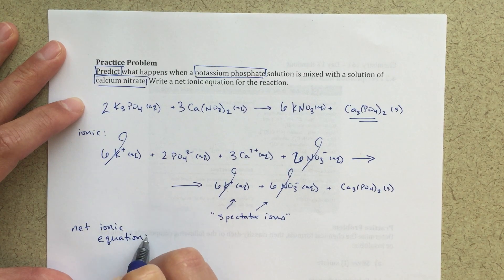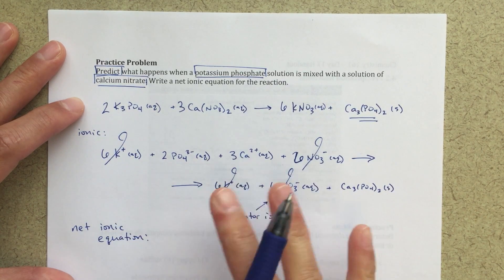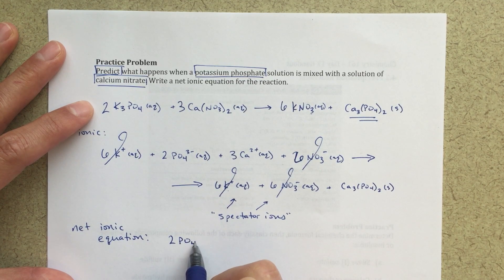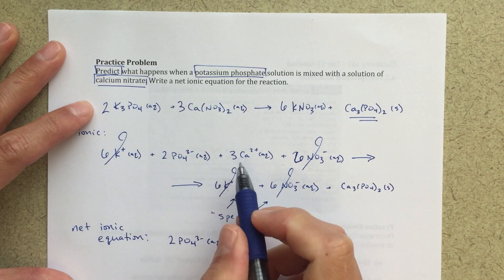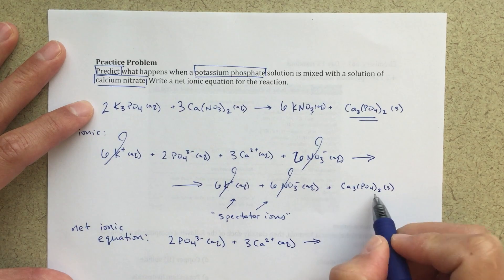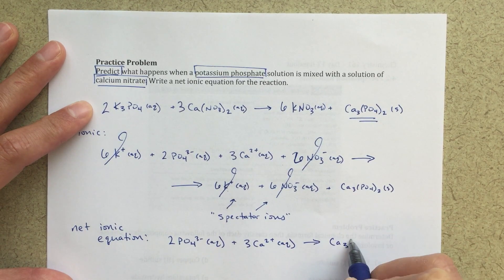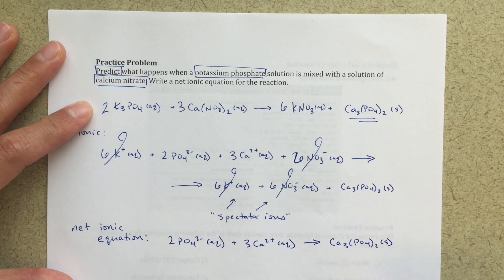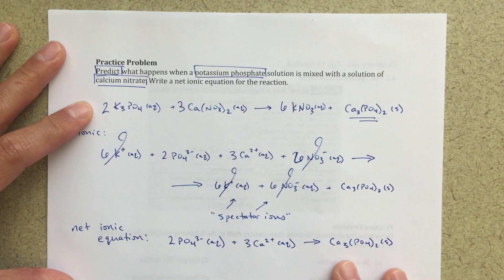So my net ionic equation, it's just going to show what is actually occurring. So what is actually occurring in this reaction? 2 PO4 3 minus aqueous, so just bringing these down, plus 3 Ca2 plus aqueous is going to react to form a calcium 3 PO4 2 precipitate. And that's going to be the solid that comes out. So this would be our net ionic equation.